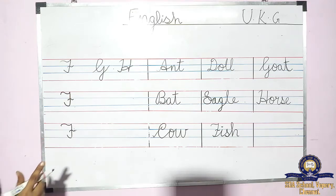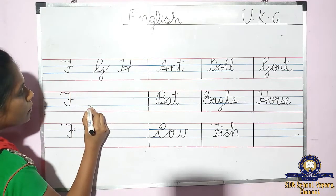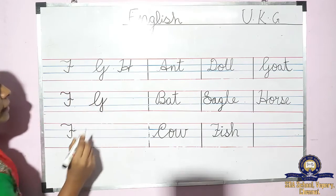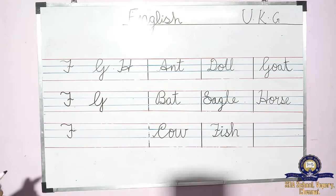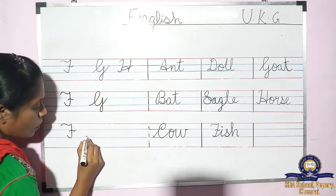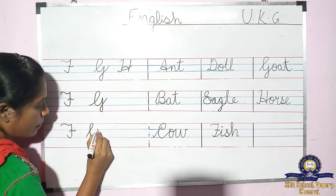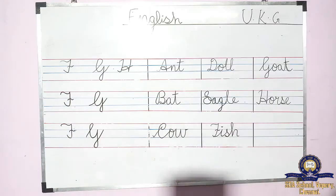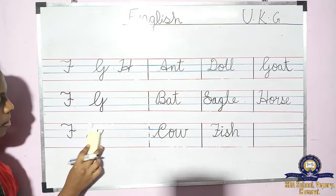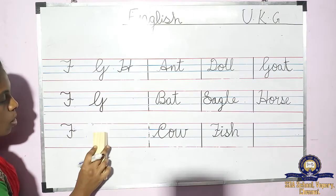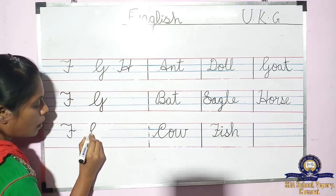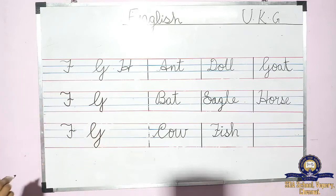Okay, the next letter is G. See — start from the blue line, then come down to the blue line, again go up, then come down to the red line, touch the blue line. G. What letter? G. Again — touch the blue line, go up, red line, come down to the blue line, again go up, come down to the red line, then go up, touch the blue line. G. What letter? G.